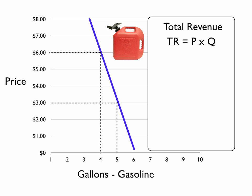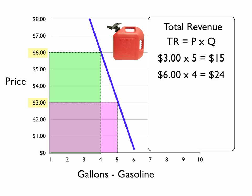Let's take a look at our gas example. We looked at two prices: three dollars and six dollars a gallon. At three dollars a gallon, the demand curve is suggesting that the quantity demanded would be five gallons, so three dollars times five equals fifteen dollars in total revenue. If we move the price up to six dollars, quantity demanded would be four units, so we would have six dollars times four, or twenty-four dollars in total revenue.